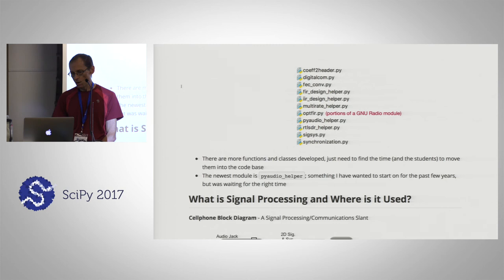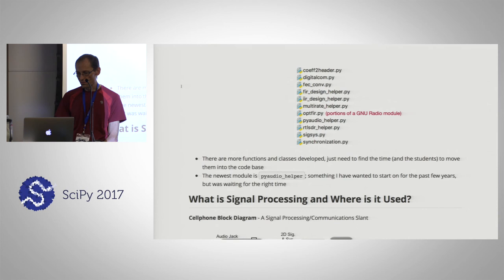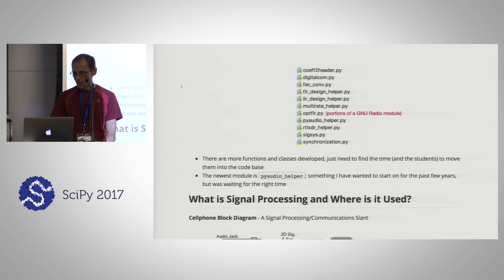We are definitely going to be using the FIR design helper and the IIR filter design helper. These two packages design two different types of digital filters, which will be used at the very end when we're working with the software-defined radio. They come up with coefficient sets which define a particular filter to pass or reject signals of interest. Their core is primarily back in scipy.signal, but I've put wrappers on them to be more consistent and user-friendly for my purposes.